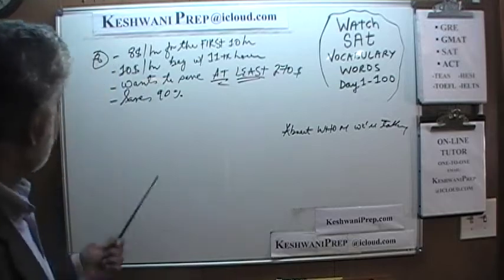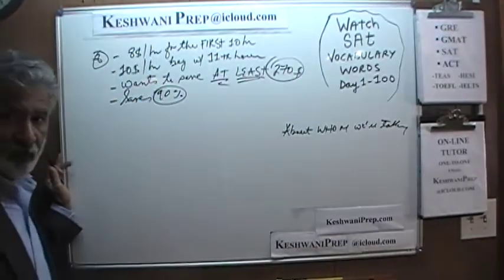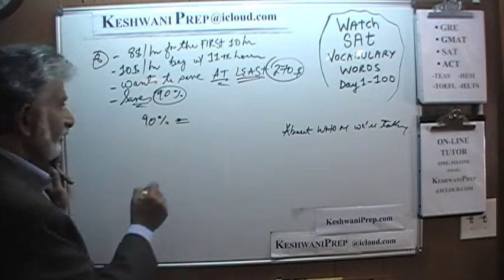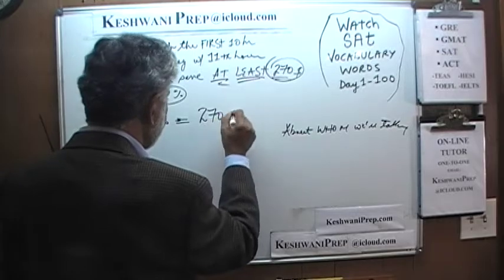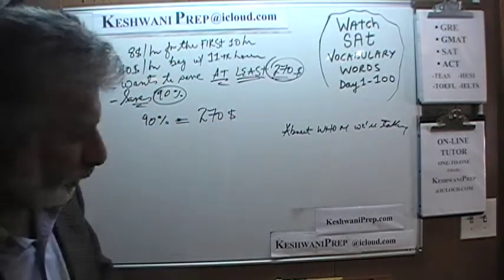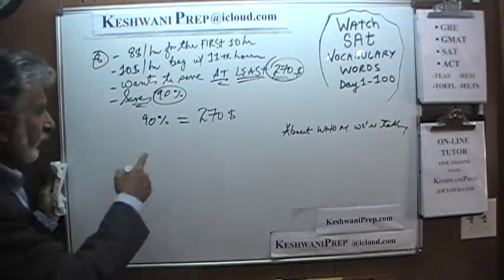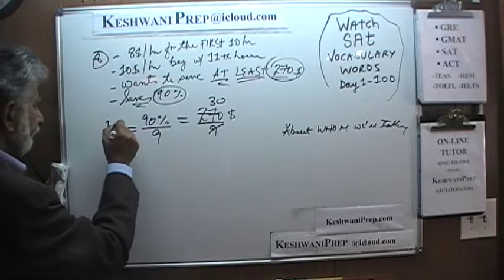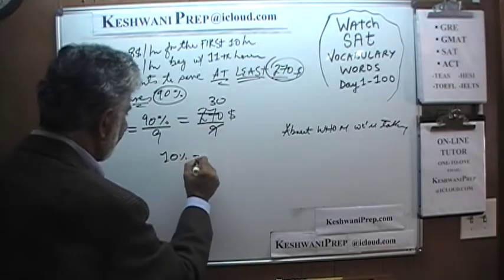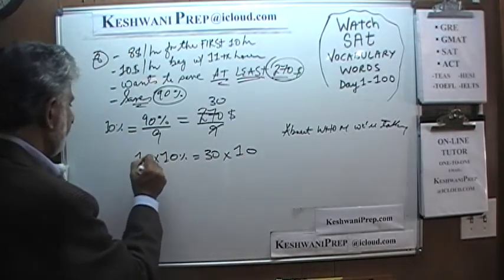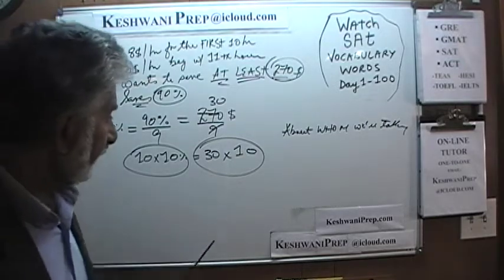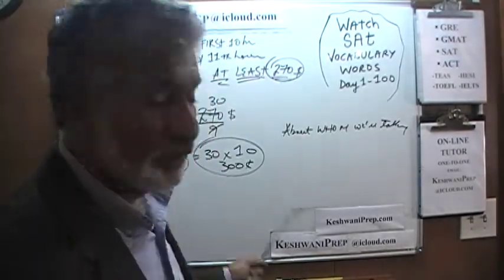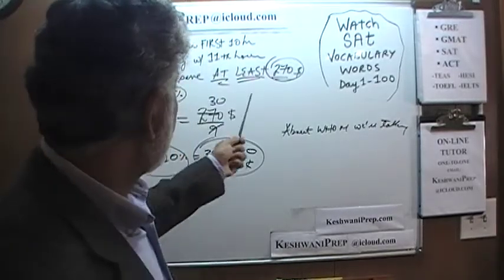Very simple. First things first: he saves 90%, and he wants to save $270. So let's figure out how much he has to earn in total. 90% that he saves has to represent $270. Dividing both sides by 9: 9 goes away, and 270 divided by 9 is 30 — that represents 10%. If 10% is $30, then 100% must be $300. It makes perfect sense: he has to earn $300 total, and 90% of $300 is $270.